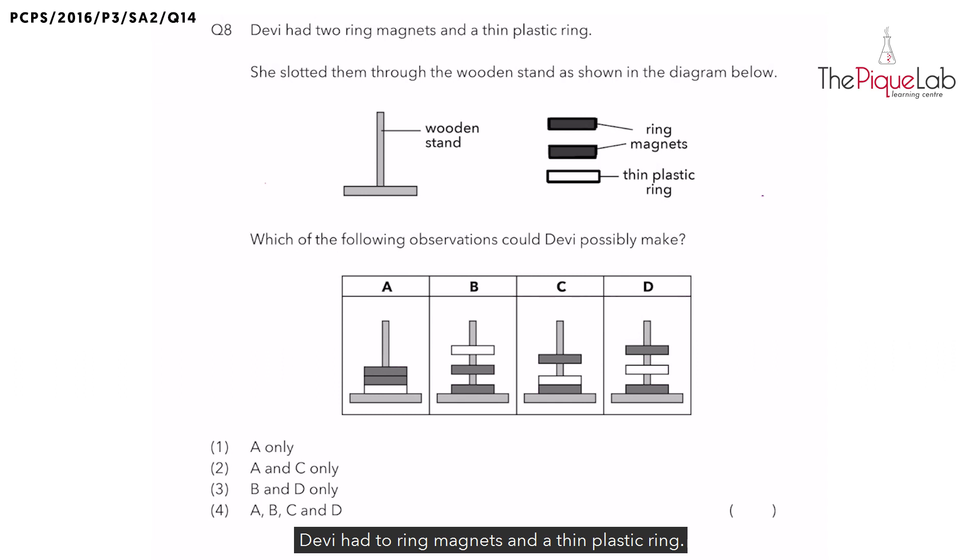Devi had two ring magnets and a thin plastic ring. She slotted them through the wooden stand as shown in this diagram below. Which of the following observations could Devi possibly make? Now, before we look at the options, I would like to go through with you some concepts using the items here.